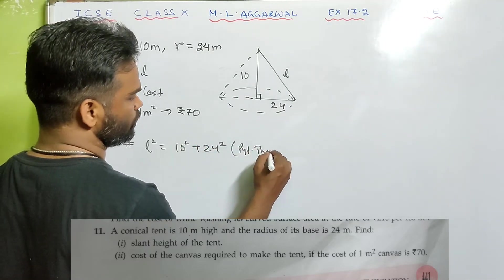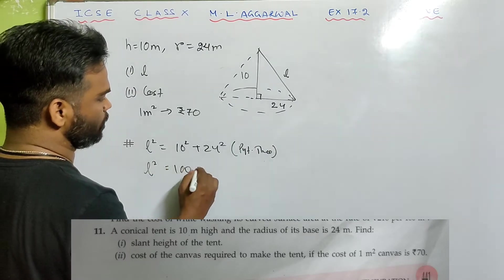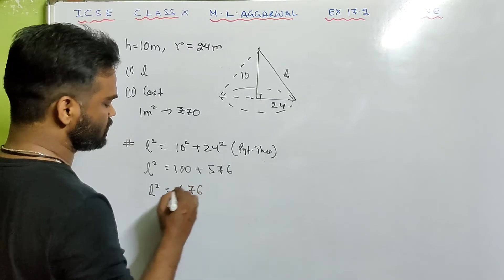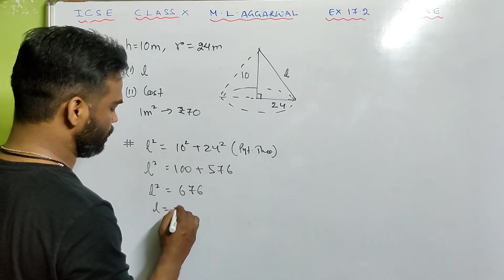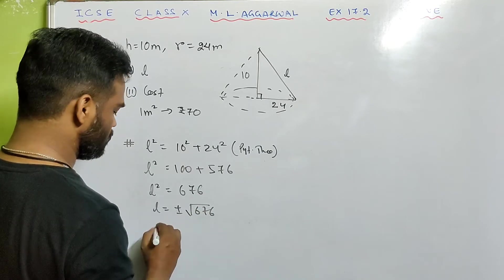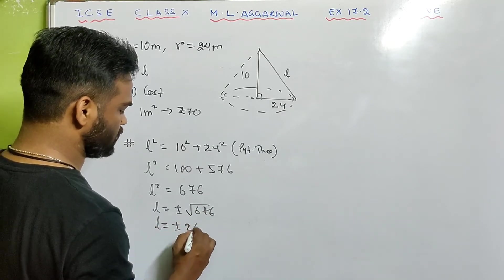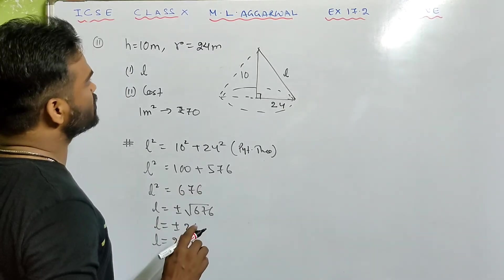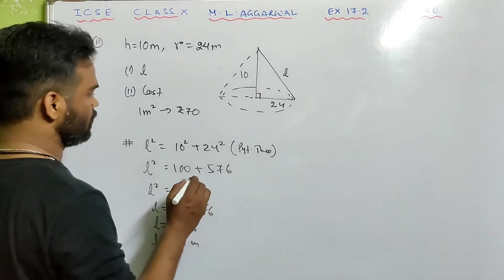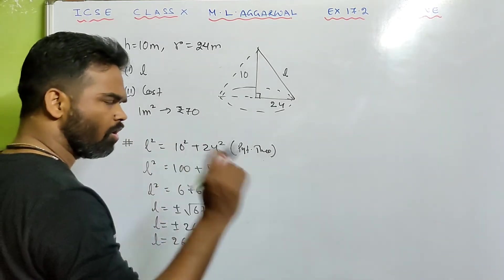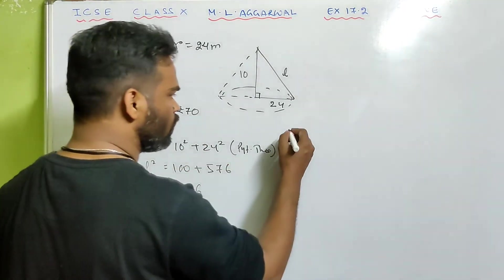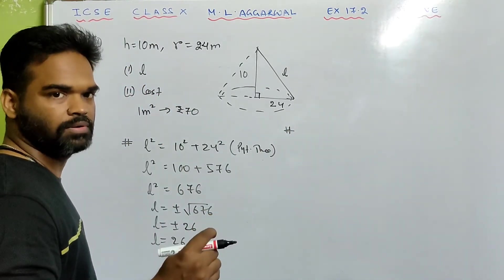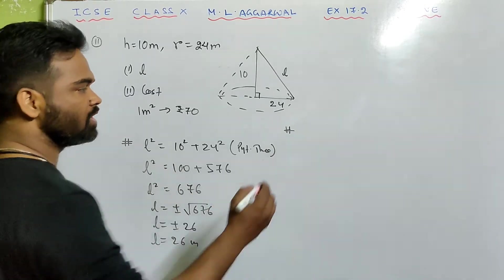Solving: l² = 100 + 576 = 676. So l = ±√676 = ±26. Taking the positive value, l = 26 meter. Now for the cost of canvas, we need the curved surface area, because that is the quantity of canvas required.